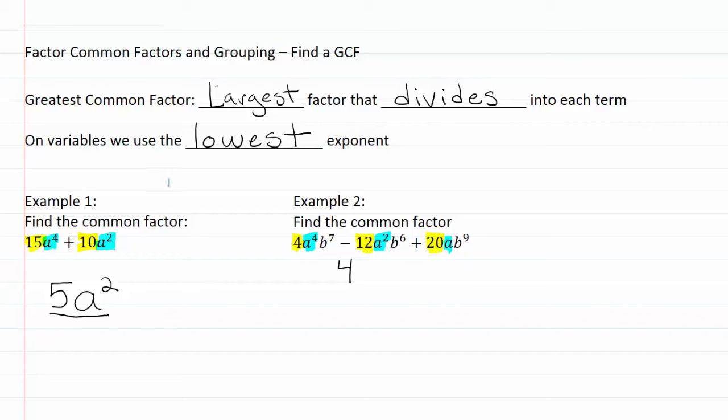When we say on variables we use the lowest exponent, we're really looking for the matching variables and the lowest exponent that goes with that variable. We know we're going to have an a and the lowest exponent here is actually one. Remember that if there is no exponent there's an invisible one with it. That one is lower than the two or the four, so that's going to be our variable in our GCF.